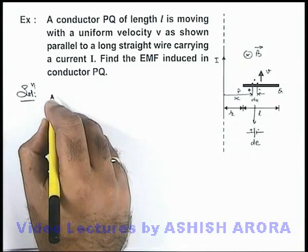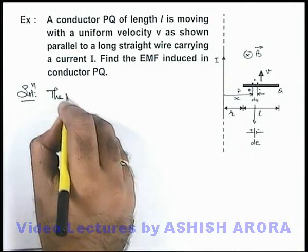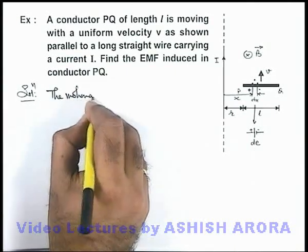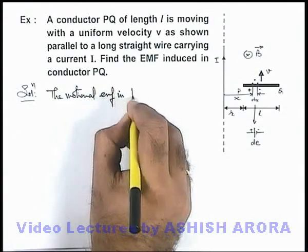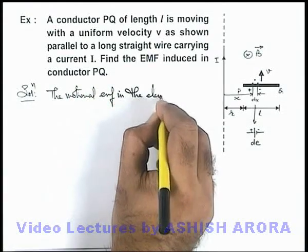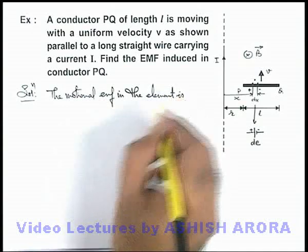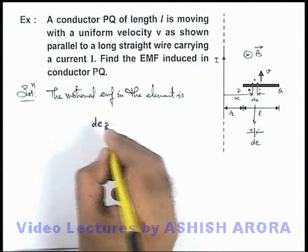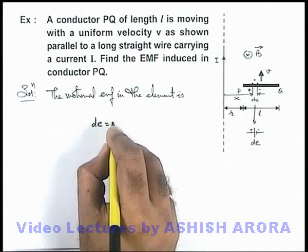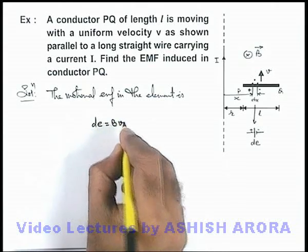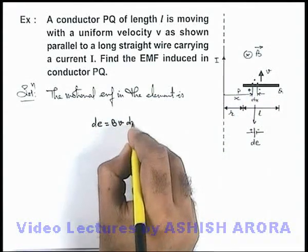So here we can write the motional EMF in the element - this motional EMF we write as bvl, so here we write magnetic induction b, the speed v, and its length is dx.